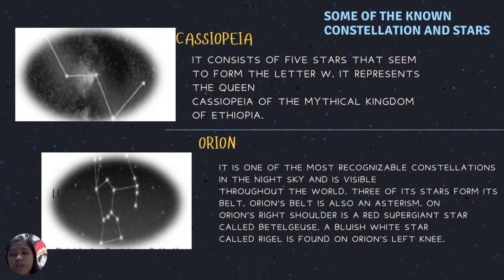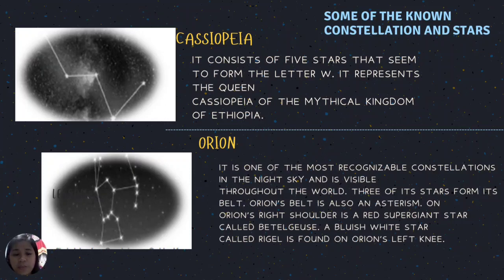Some constellations are named after Greek mythology legends. Two of them are Cassiopeia the Queen and Orion the Hunter. Cassiopeia consists of five stars that seem to form the letter W, representing Queen Cassiopeia of the mythical kingdom of Ethiopia. Orion is one of the most recognizable constellations in the night sky and is visible throughout the world.